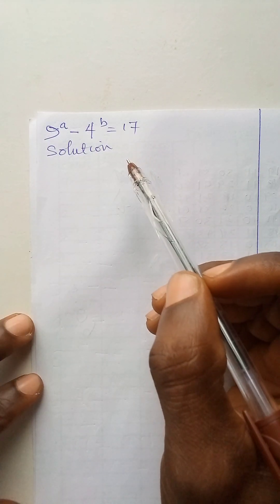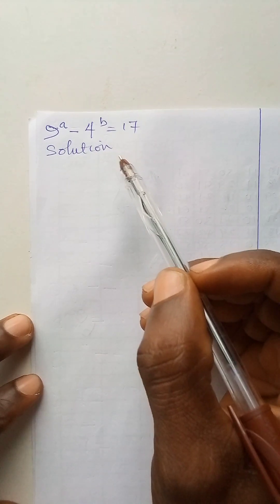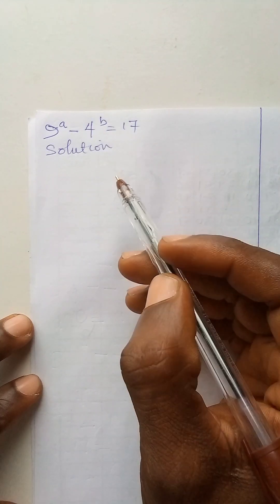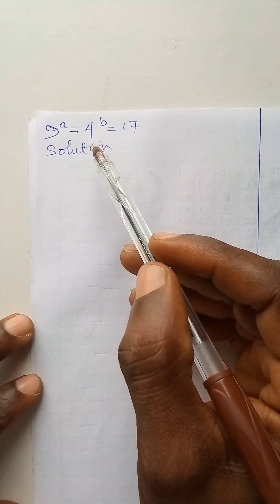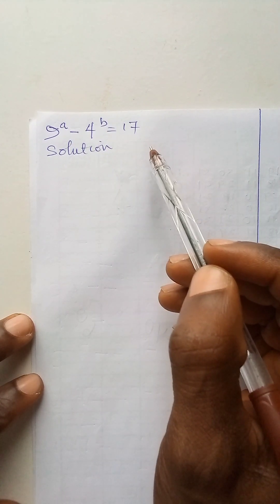In today's video, we'll be required to find the value of a and b, given that 9 to power a minus 4 to power b is equal to 17.